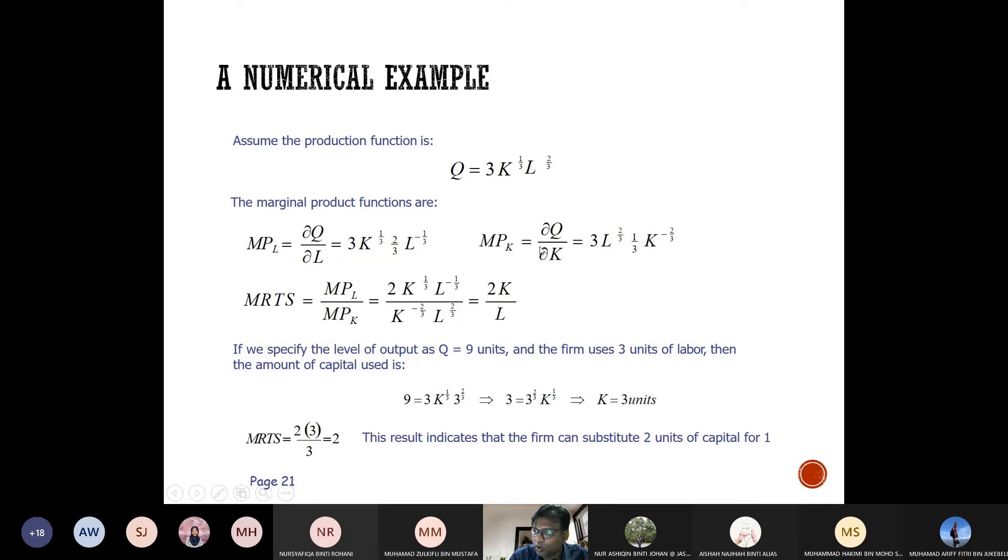Likewise for the marginal product of capital, you differentiate ∂Q/∂K. But this time you differentiate K, not L, so L stays constant. You differentiate only the capital K. So it's 3L^(2/3) times - bring the one-third in front - and K becomes K^(-2/3).